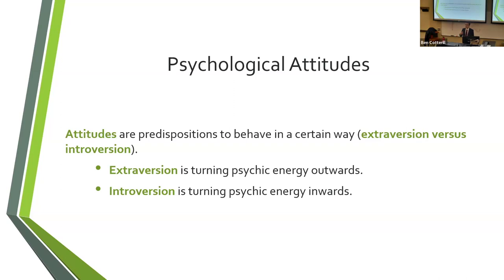For Jung, part of the individuation process is that as you get older, you're striving towards a level of balance. During this process you're becoming more and more balanced in terms of your introversion and extroversion, eventually later in your development. Jung describes himself as introverted for most of his life, but by the later stage he believed he had reached a level of balance — he could no longer be described as introverted or extroverted, because he had reached balance between them.